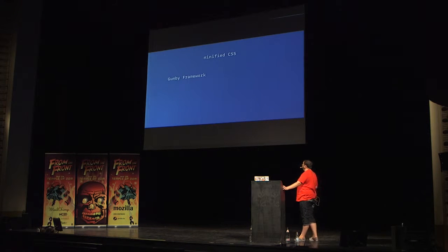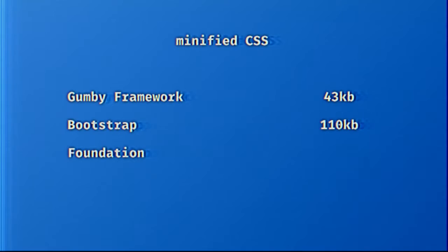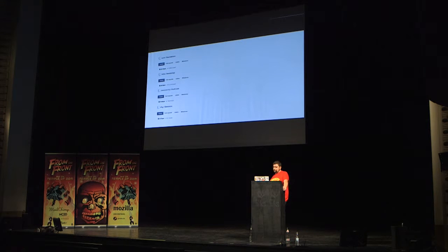I took a couple of frameworks and looked at their minified CSS. The Gumby framework has a minified CSS of about 43 kilobytes — not too bad. Bootstrap's minified CSS is 110 kilobytes. Foundation — I did a workshop with a client in Bath and they used Foundation. I was quite surprised to find that the minified CSS for Foundation was 140K. I thought it was a bit smaller than Bootstrap's. So you've got those good and bad points, plus issues, because other people maintain it and other people use it — other people find the issues that can cause you problems. If you're developing just for yourself or your team, chances are those issues will get squashed a lot quicker.